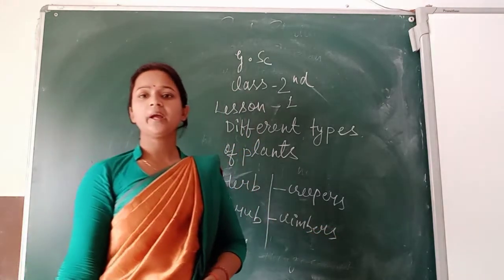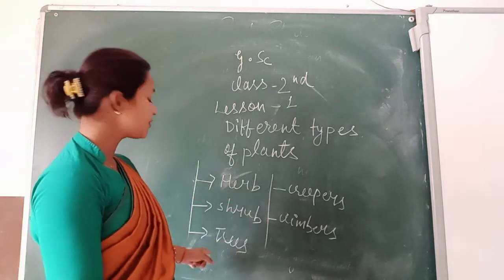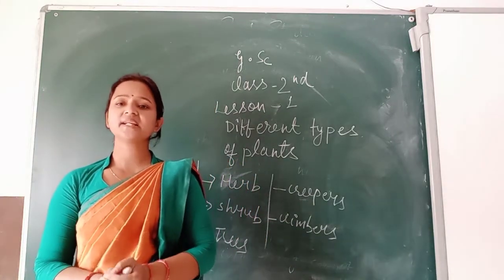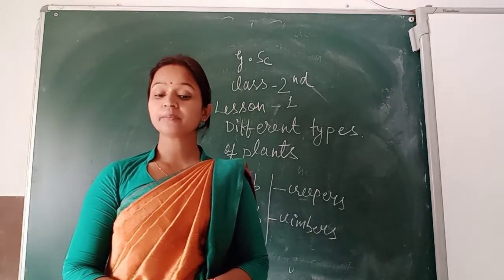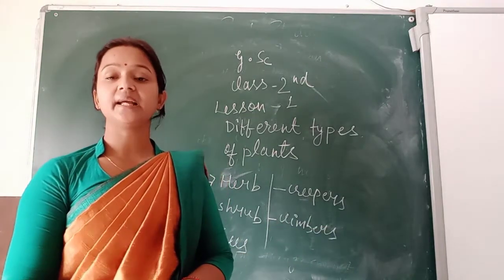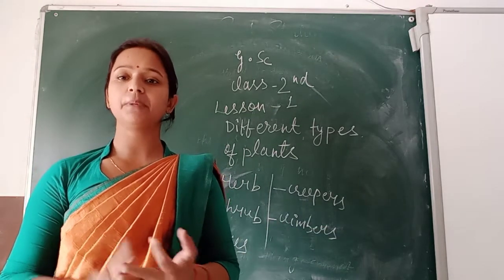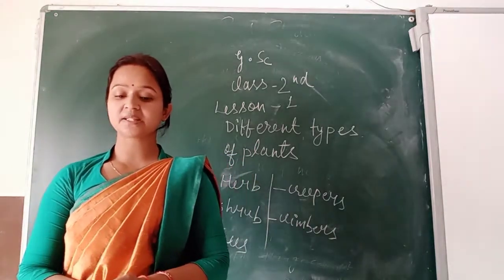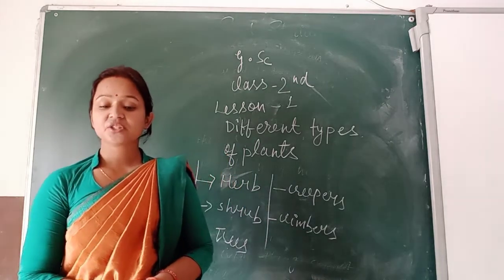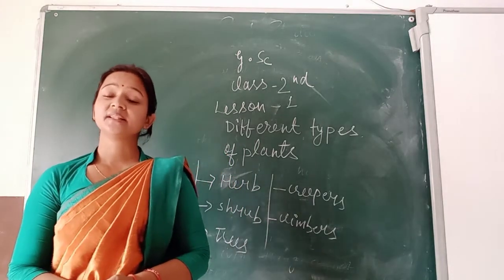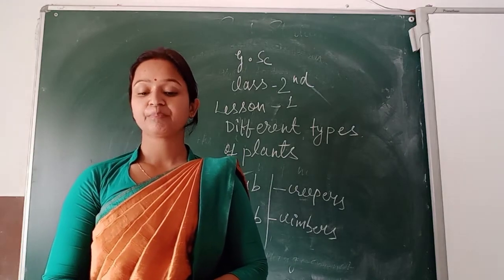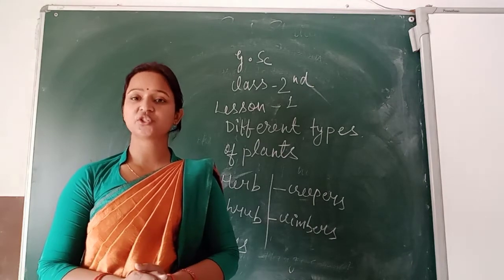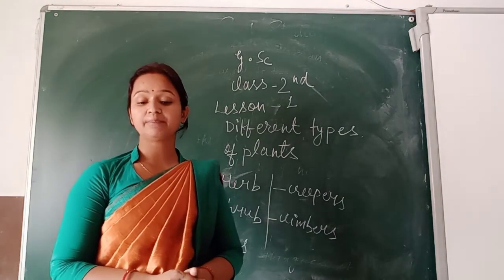So in the last topic I discussed about the herb and shrubs, and today I will discuss about the trees. What are trees? You know, trees are big and they live for many years. Examples of trees: mango tree, neem tree, peepal tree, and guava tree. Banyan tree. They live for many years and they have hard woody stems that is called the trunk, and mostly have thick branches.